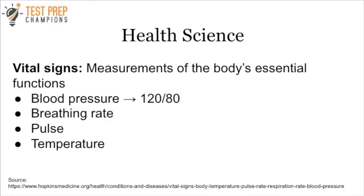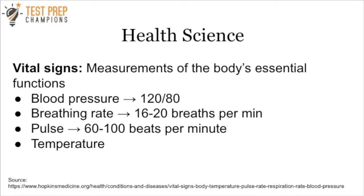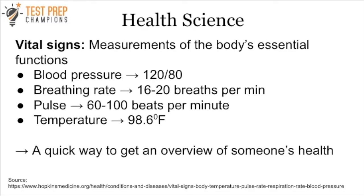A normal blood pressure is about 120 over 80. The average breathing rate for a healthy adult is 16 to 20 breaths per minute. The normal adult pulse is in the range of 60 to 100 beats per minute. And the normal temperature is 98.6 degrees. Everybody's going to be different, but these vital signs give you a quick overview of your health.